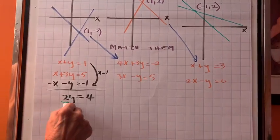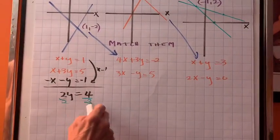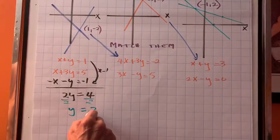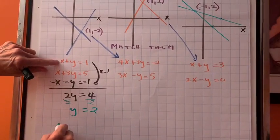Now we're going to add. Two y equals four. Divide by two. Y is two.